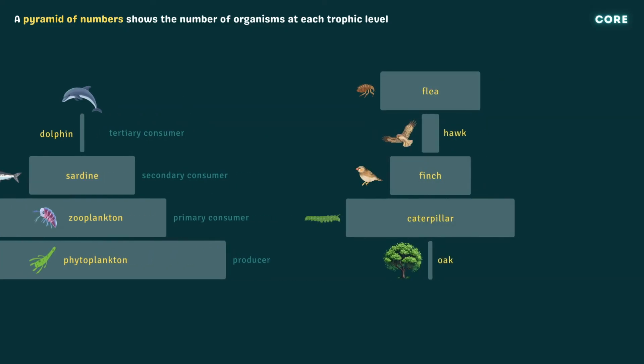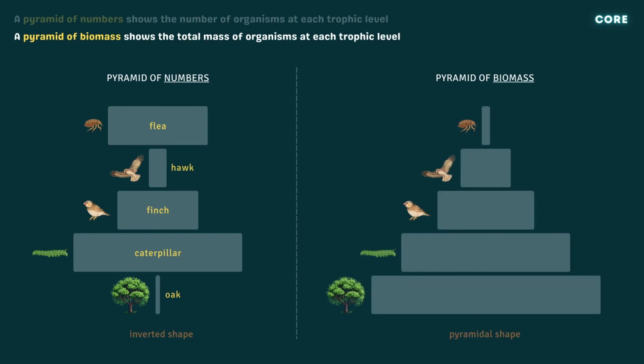Pyramids of numbers don't always take the form of a pyramid with a broad base. In this example, a single oak tree sustains huge numbers of caterpillars, so the shape of the pyramid is somewhat inverted. To get around this issue, pyramids of biomass can be used instead. The width of the bands in a pyramid of biomass show the mass or dry weight of organisms at each trophic level. Pyramids of biomass therefore give a clearer picture of the amount of plant or animal material at each trophic level of a food chain, and are nearly always pyramidal in shape.